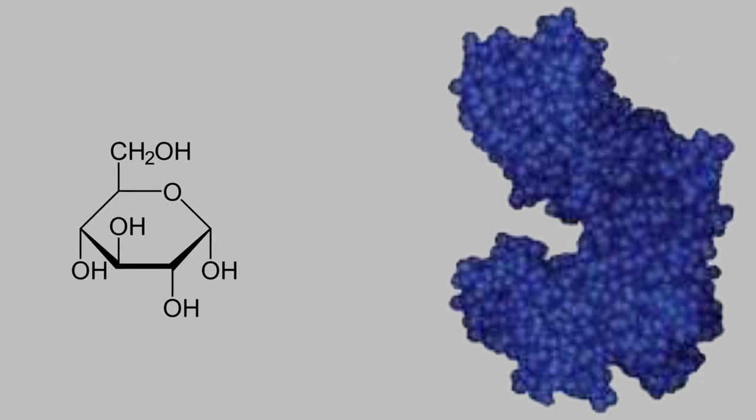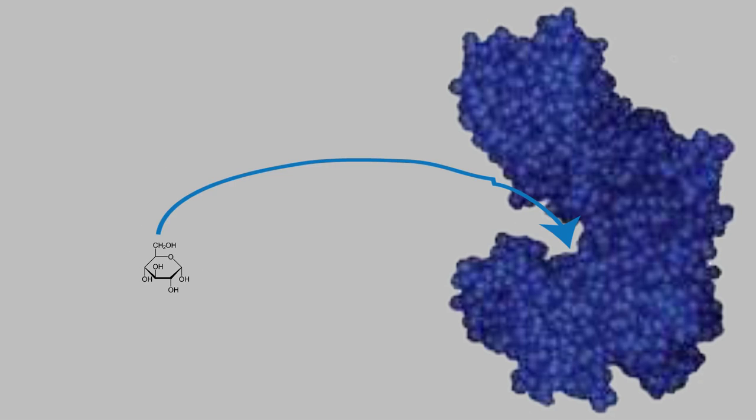The glucose has just the right shape to fit into this pocket on the enzyme, called the active site. Other molecules with a slightly different shape won't fit into the active site. And that's important, because your cells contain tens of thousands of different chemicals.